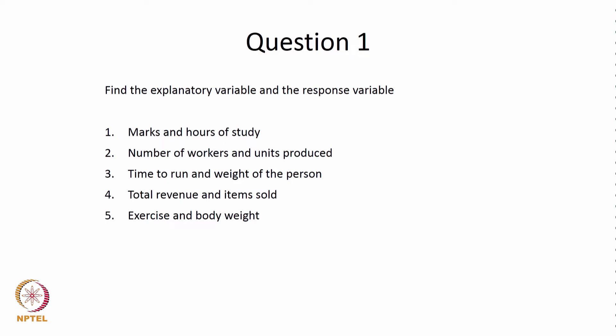Number of workers and quantity produced: as we put in more workers we end up producing more quantity. Therefore, number of workers is the explanatory variable and units produced is the response variable. Third: time taken to run a particular distance and the weight of a person. The general assumption is that as the person is heavier they take more time to run. Therefore, weight of the person is the explanatory variable and time taken to run is the response variable.